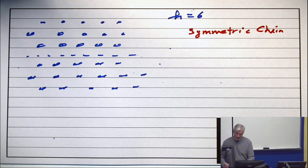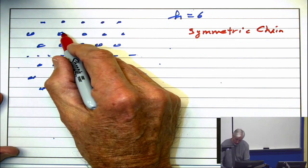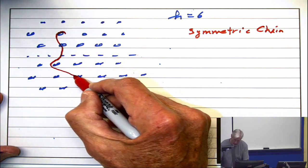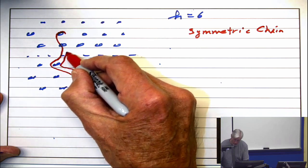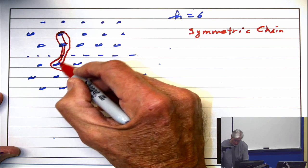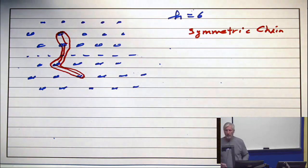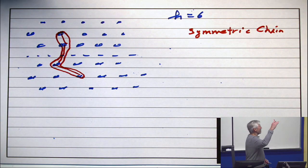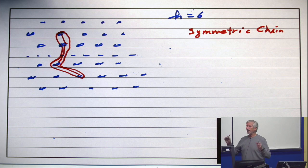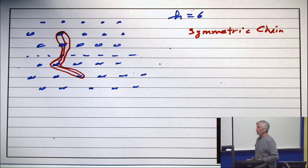A symmetric chain is a chain that is, first of all, a chain. So I need these covering relations. And it goes the same distance above the middle as it goes below the middle, and it doesn't skip levels. So that's a symmetric chain.